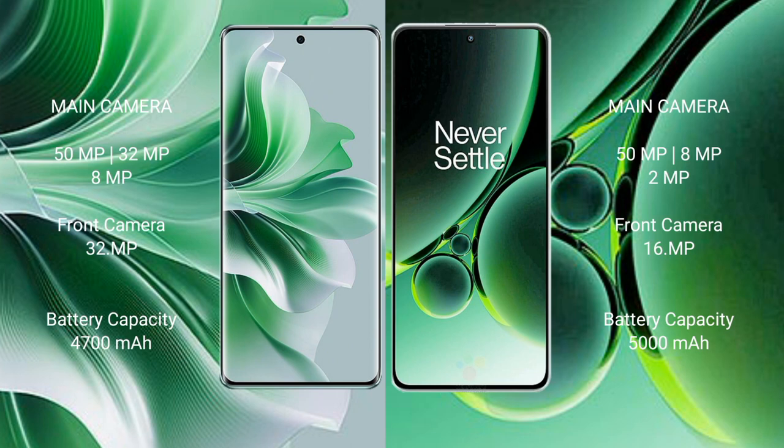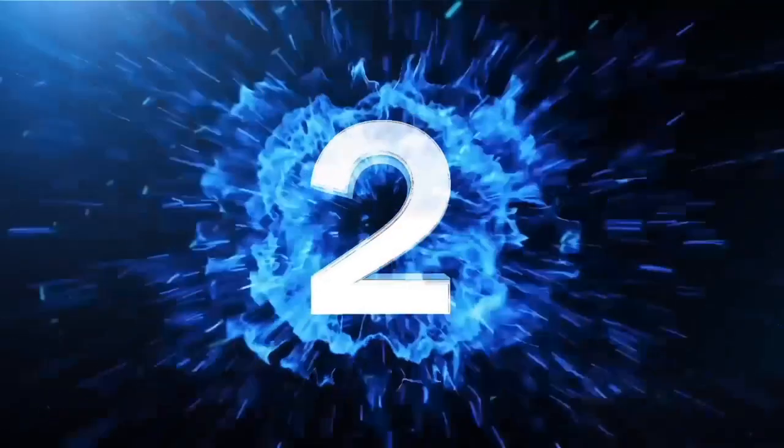Oppo Reno 11 Pro has a 4700mAh battery with 80W fast charging support. OnePlus Nord 3 has a 5000mAh battery with 80W fast charging support.